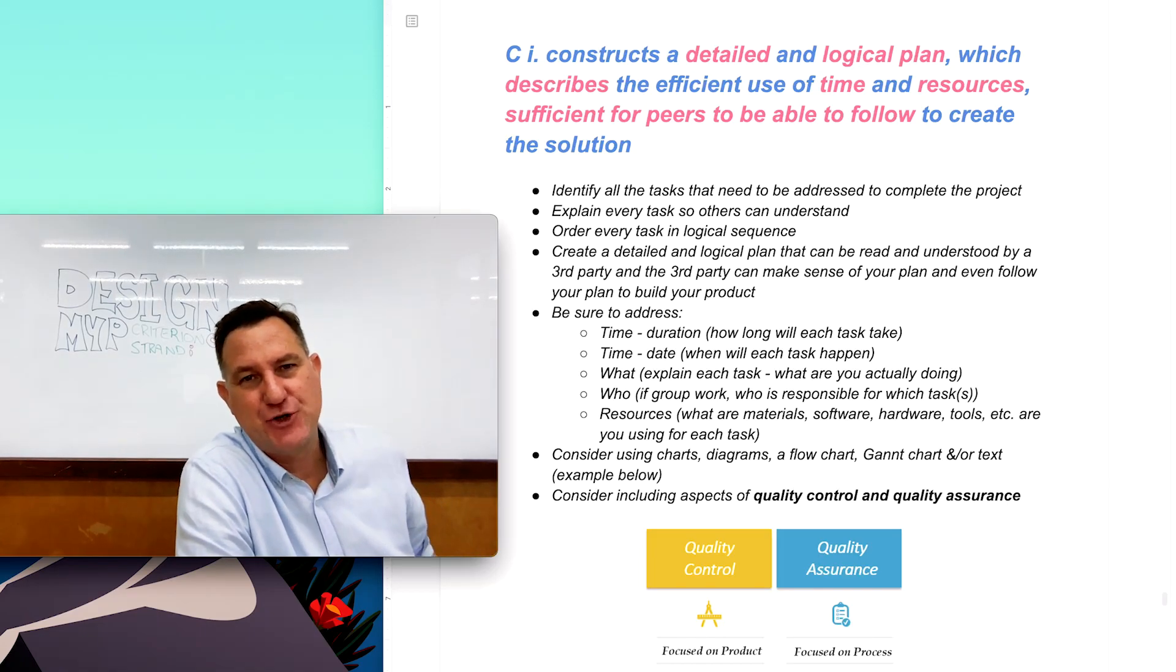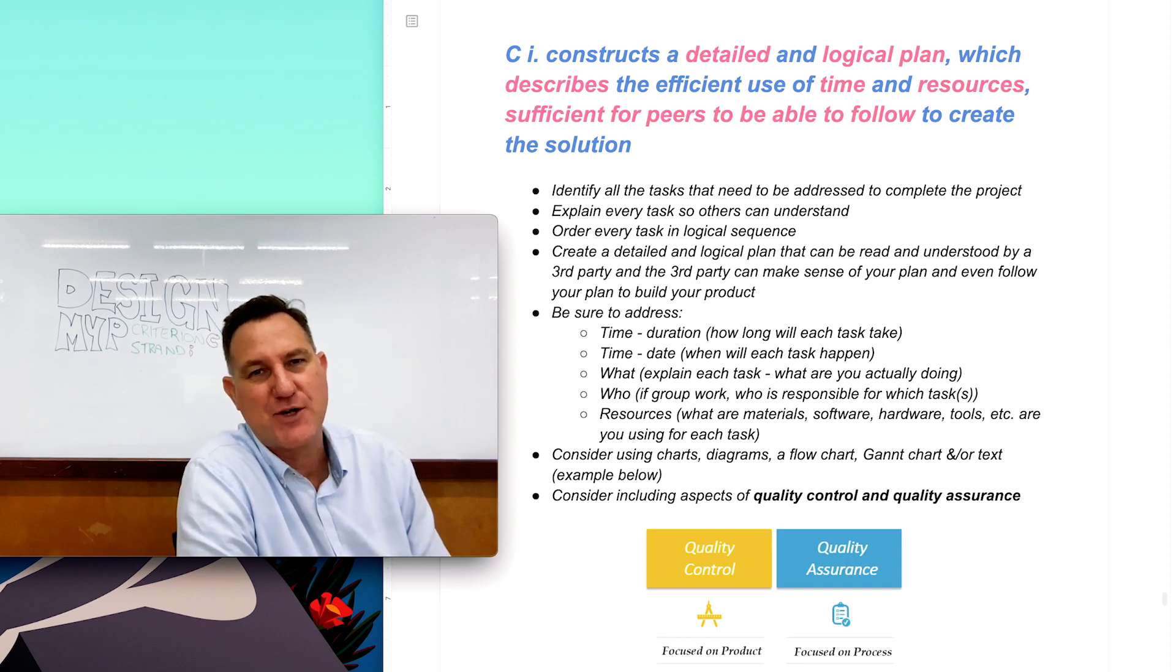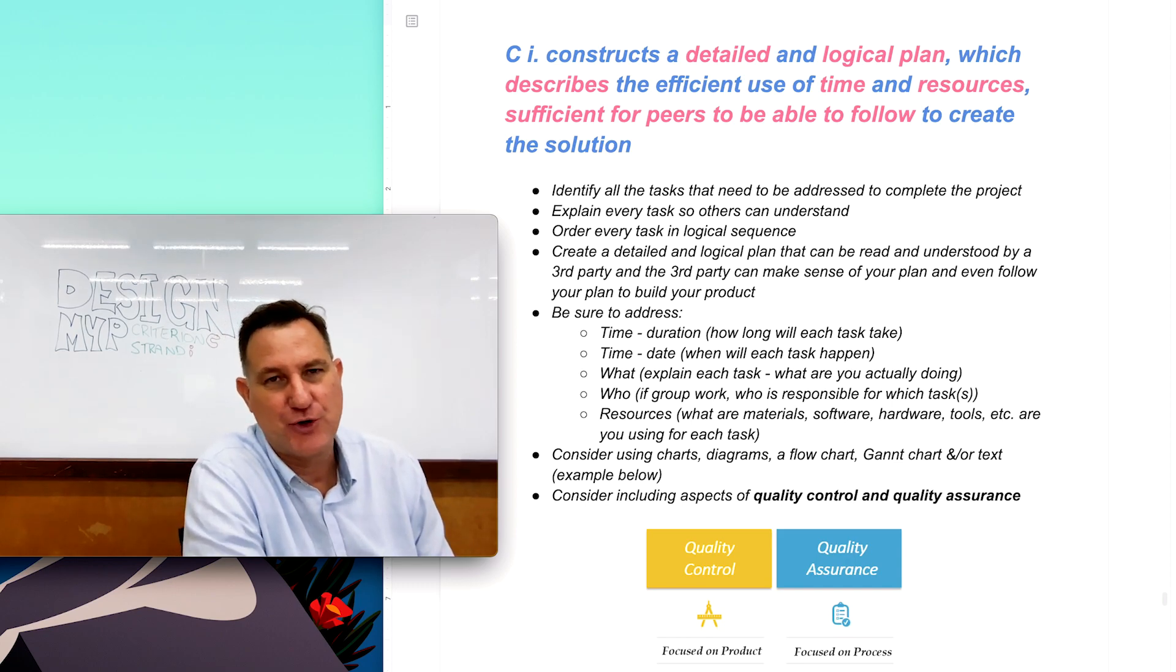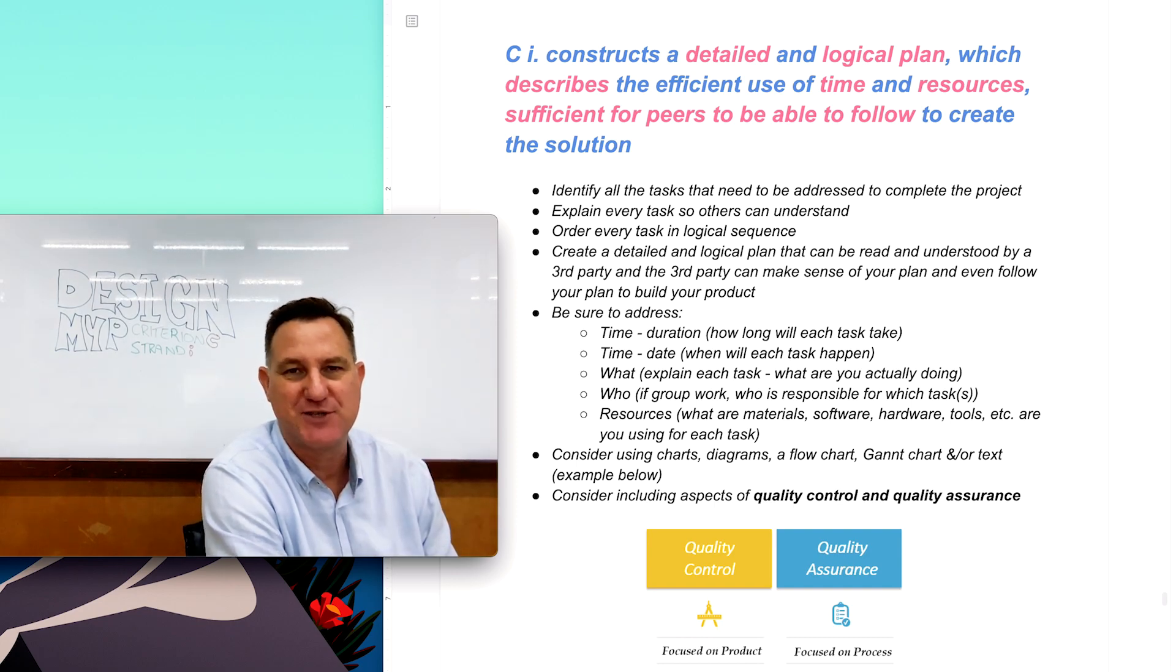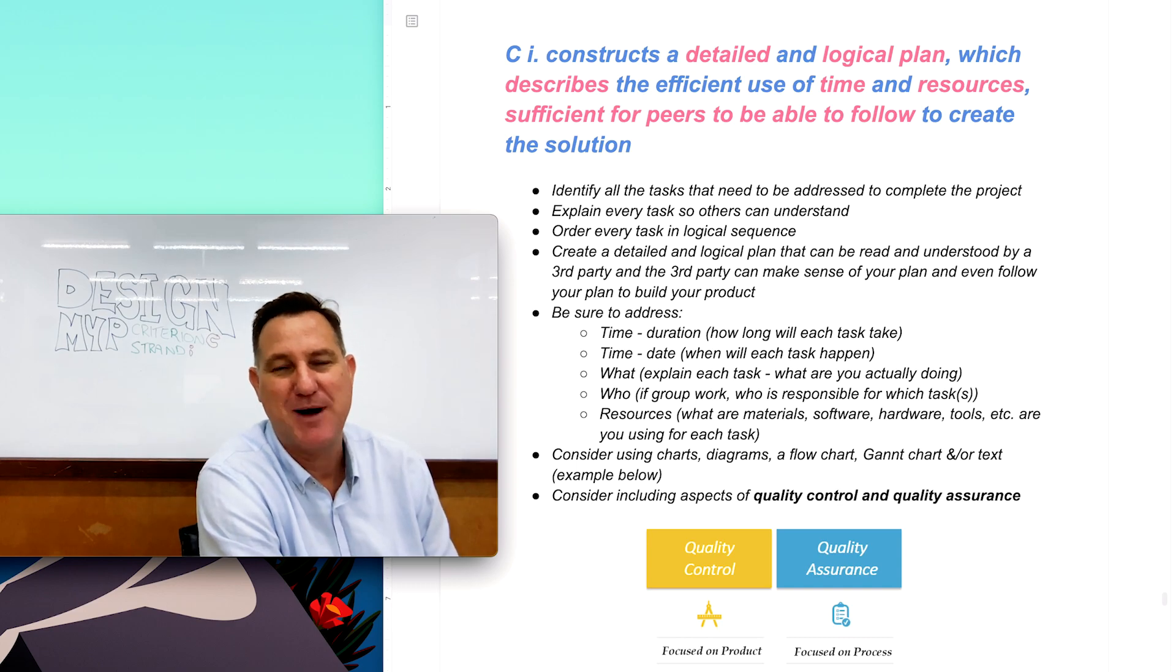So this video is for NYP students who are design students and they're wanting to get top marks for Criterion C, in particular Strand 1. I'm going to talk you through a few points about what you should try to do and include in your summative assessment report so you get top marks.